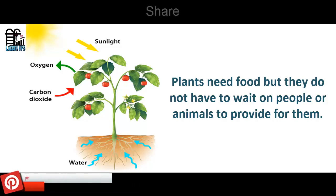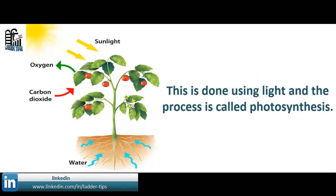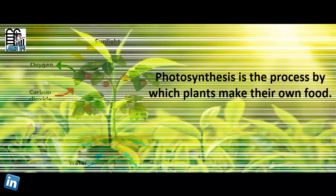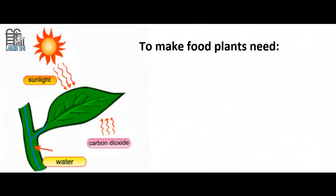Most plants are able to make their own food whenever they need it. This is done using light, and the process is called photosynthesis. Photosynthesis is the process by which plants make their own food. To make food, plants need carbon dioxide, water, and sunlight.